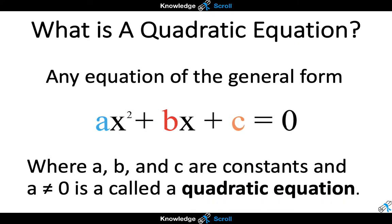First thing you should know is any equation that has the general formula ax squared plus bx plus c is called a quadratic equation, where a, b and c are constants, but a can't be zero.